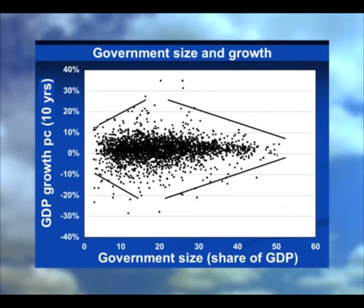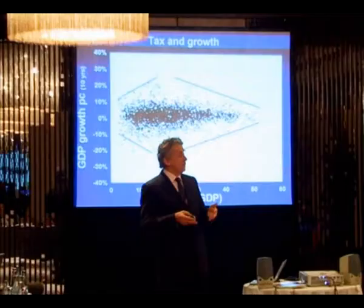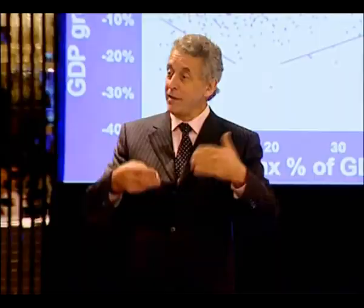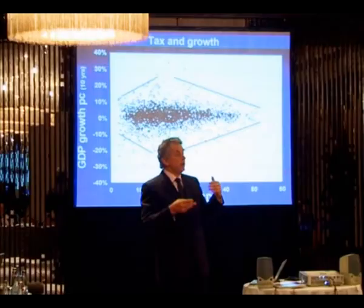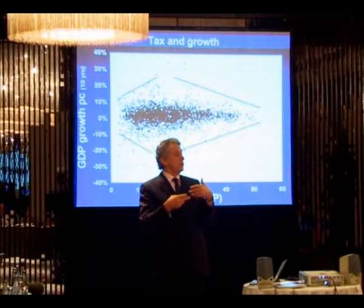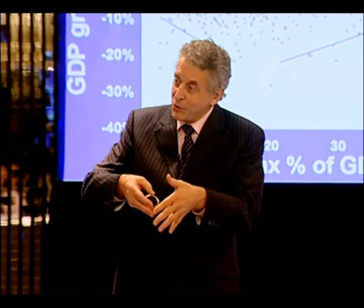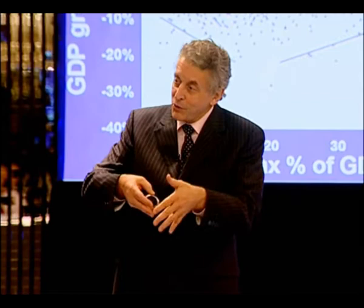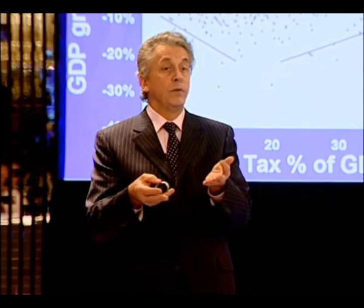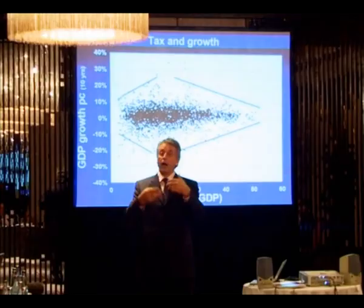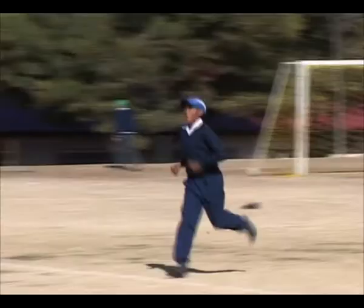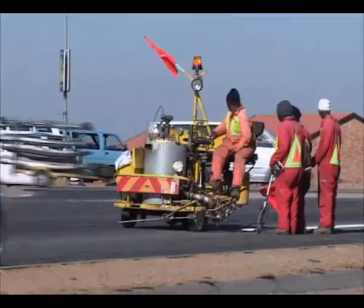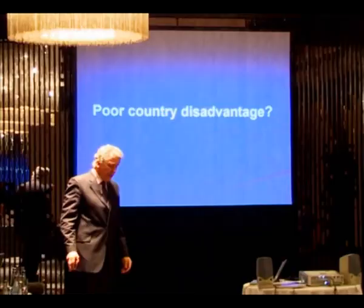Governments who tax more don't necessarily damage their economies or have less growth. What matters is really how they spend the money — not how much they take, but what they do with it. If they spend money getting involved in parastatals, these investments tend not only to run at losses and require permanent subsidies, but also come along with protection to keep out more efficient private competitors. Government investment in the economy tends to coincide with low economic growth, and government over-regulation coincides with poor growth. What government should do once it's taken the money is give it to needy people — welfare, education, healthcare, infrastructure development.